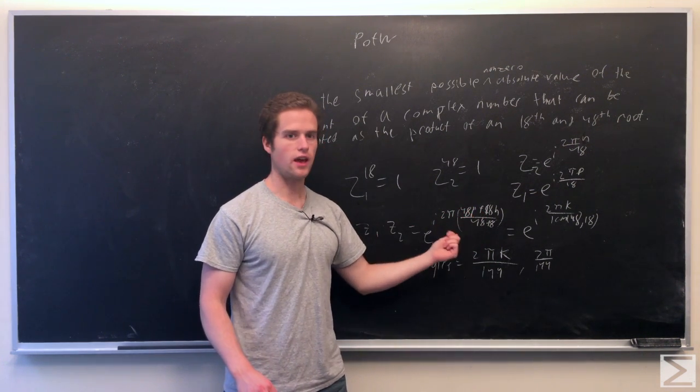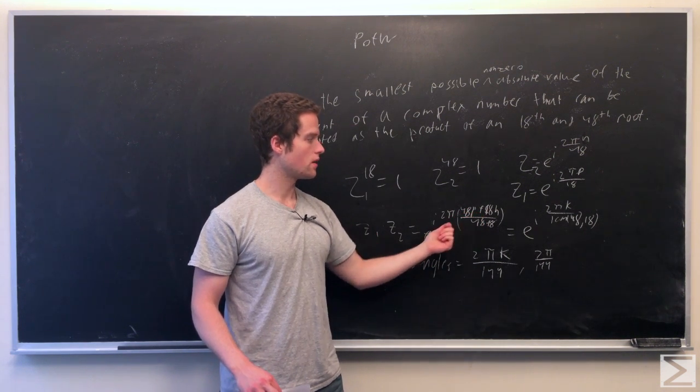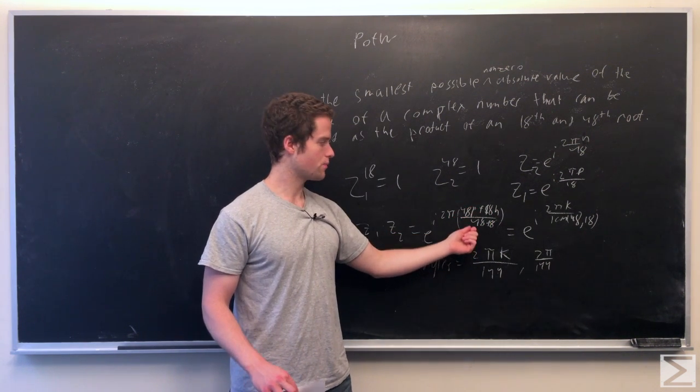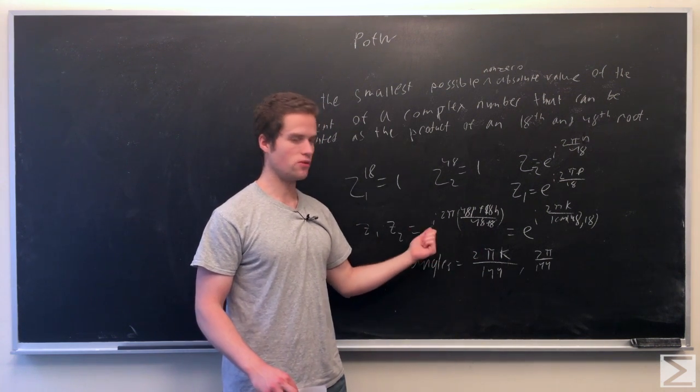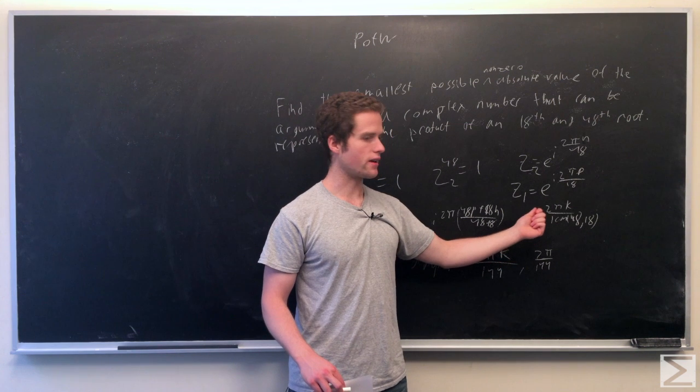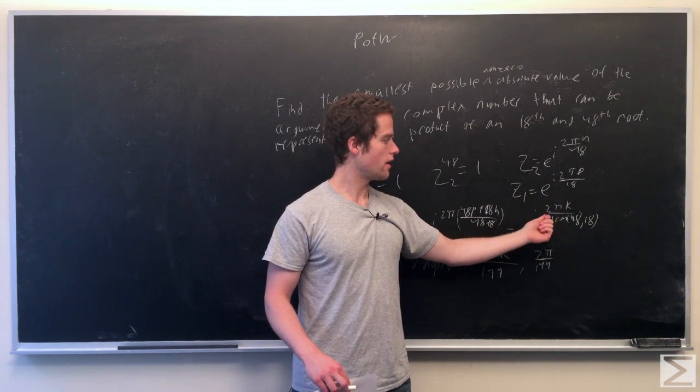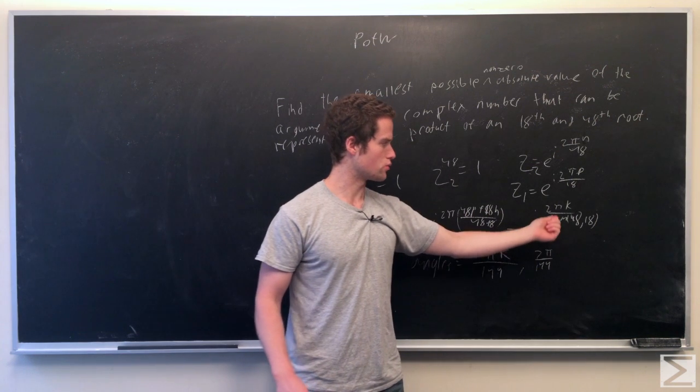This sum on the top is just k times the greatest common divisor of 48 times 18. Then if we bring this on bottom, 48 times 18 divided by the greatest common divisor is just the least common multiple of these two. So this is equal to e to the i 2 pi k, where k is any integer, and we have the least common multiple of 48 and 18 on bottom, and this is 144.